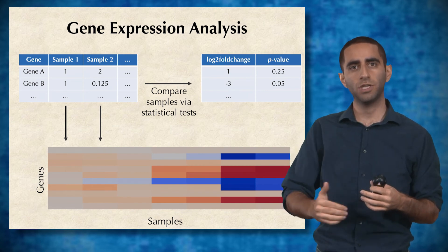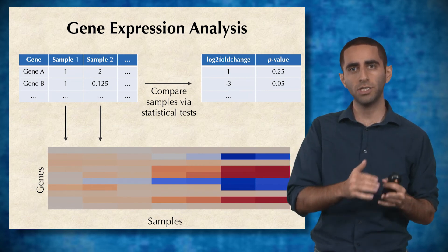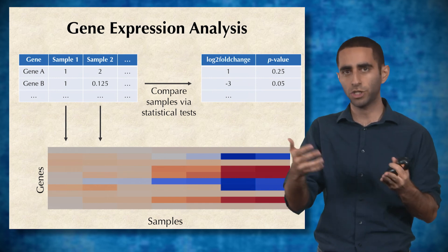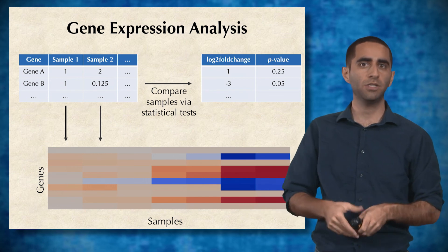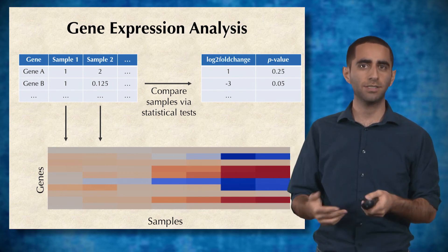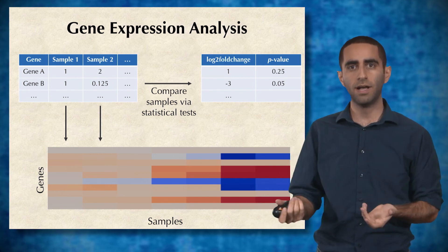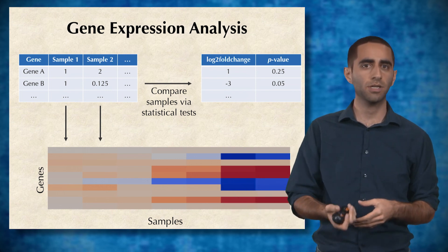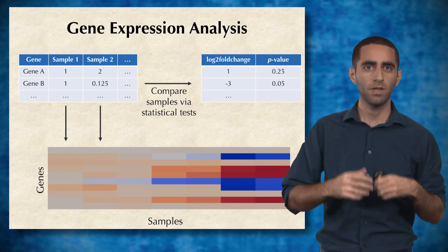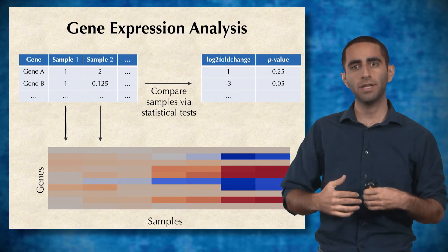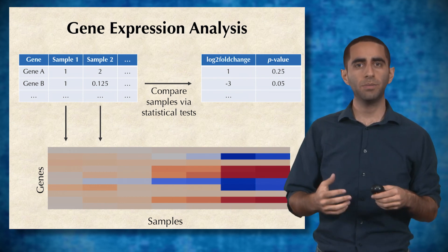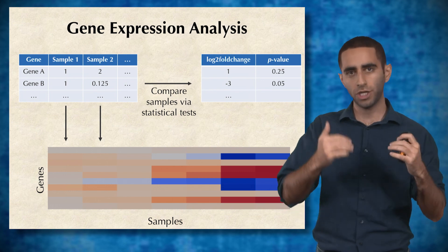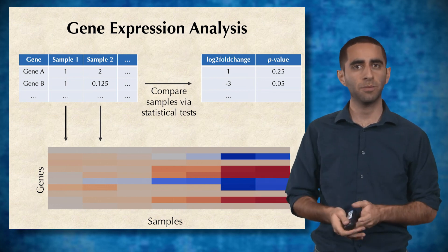Now that we have a log2 fold change for every single gene — the log base two of how expression changed across samples — we apply statistical tests to get a p-value indicating whether a gene is significantly differentially expressed. Similarly, we can look at a heatmap to visually see how expression changes across genes as well as across different experimental conditions.